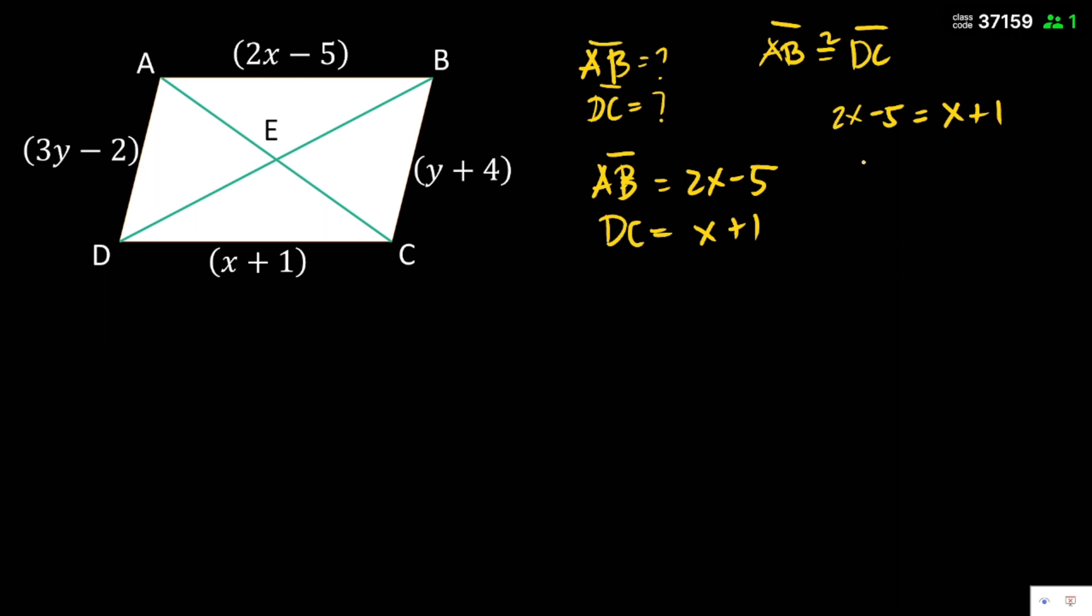So, meaning we have 2x minus 5 is equal to x plus 1. Now, apply natin yung property na equality. So, yung 5, lipat yan natin dito. So, negative, maging positive siya, 5. And tong x na to, lipat naman natin dito. So, now we have 2x minus x. Since positive, change the sign to negative is equal now to 1 plus 5 is 6. Then, 2x minus x is 1x or x. Then x is equal to 6.